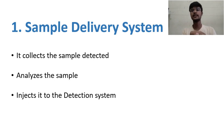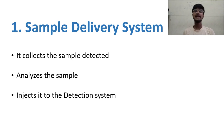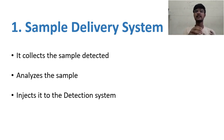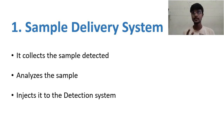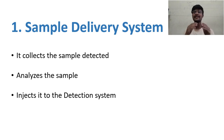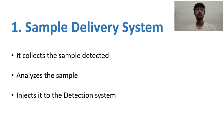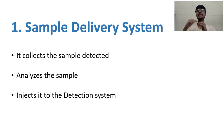The first block is the sample delivery system. Whenever the electronic nose detects some smell, the sample delivery system collects that sample, analyzes it, and derives data from it. That data is then injected into the detection system. In simple words, it collects the sample, extracts the data from it, and passes that data to the detection system.